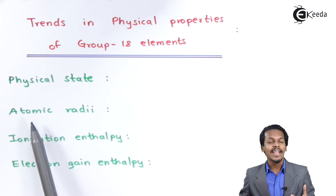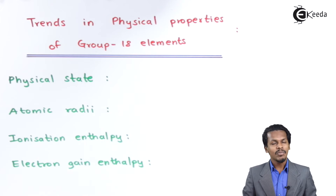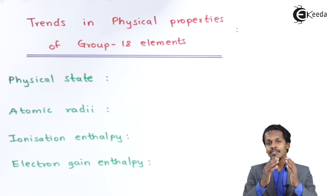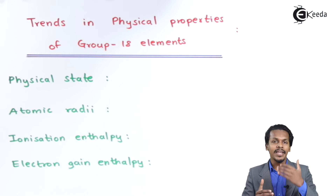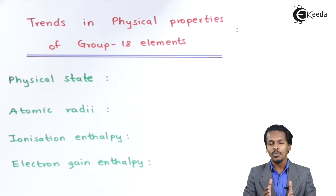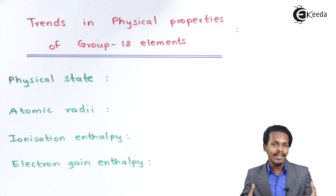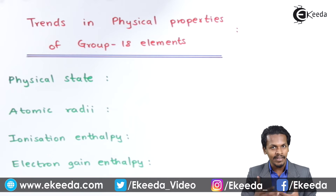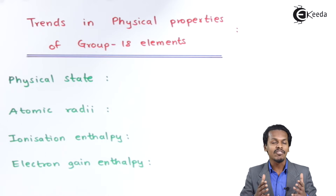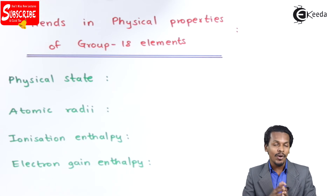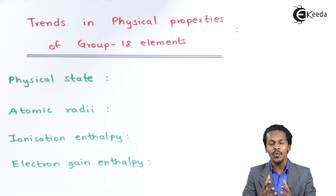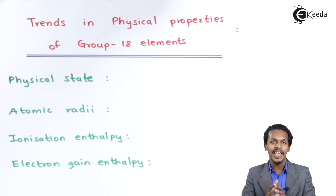Regarding atomic radius: as we move from top to bottom, that is from helium to radon, the atomic size goes on increasing. The reason is that the number of shells also increases from helium to radon. Here, the atomic radius is the van der Waals radius, due to the intermolecular force of attraction between the gas molecules.